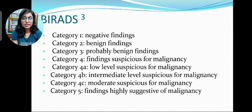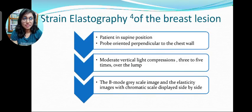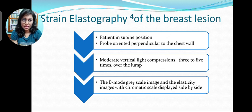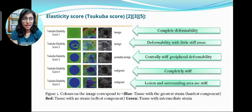These are the BI-RADS categories, which are well known to us. For strain elastography of the breast lesion: the patient is placed in supine position, the probe is oriented perpendicular to the chest wall, then moderate vertical light compressions are applied over the lesion 3–5 times, and the B-mode image and elasticity image are displayed side by side. This is the elasticity score, also known as the Tsukuba score. Score above 4 is considered malignant and below that is benign. Score 1 consists of lesions which are completely deformable, and score 5 represents lesions which are stiff with the surrounding area also stiff.